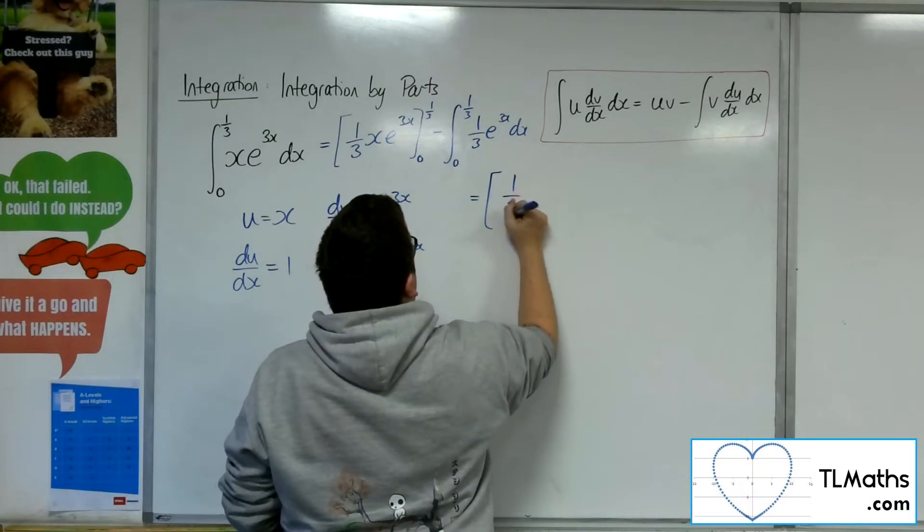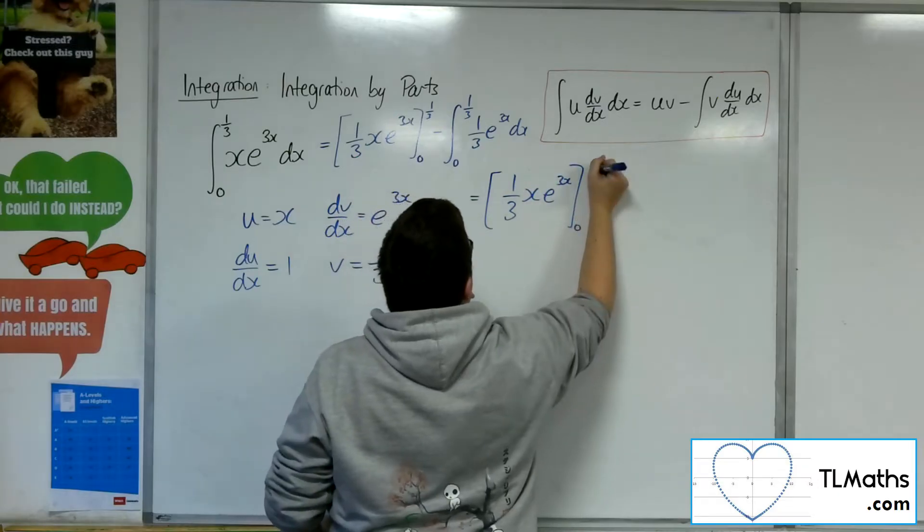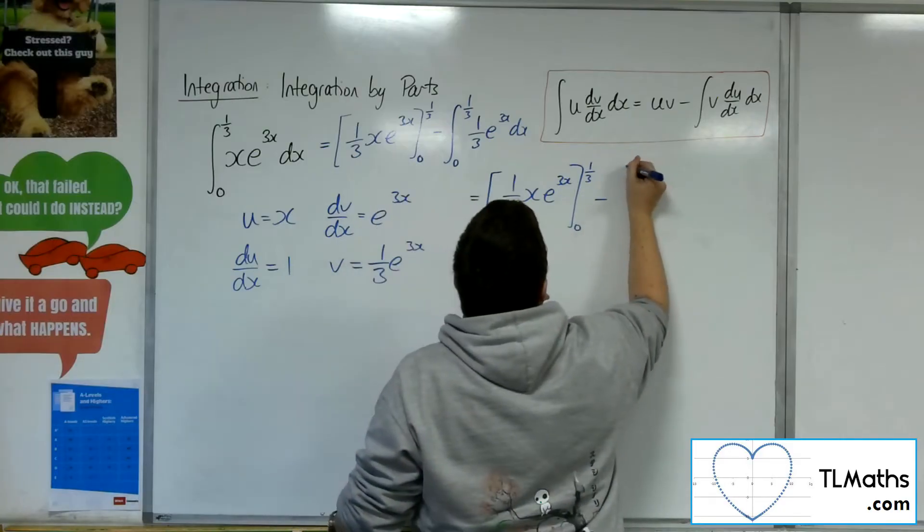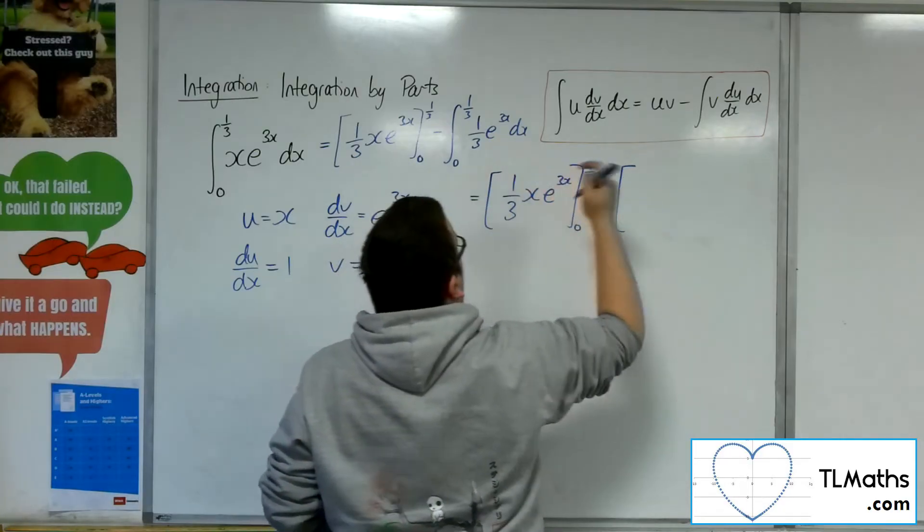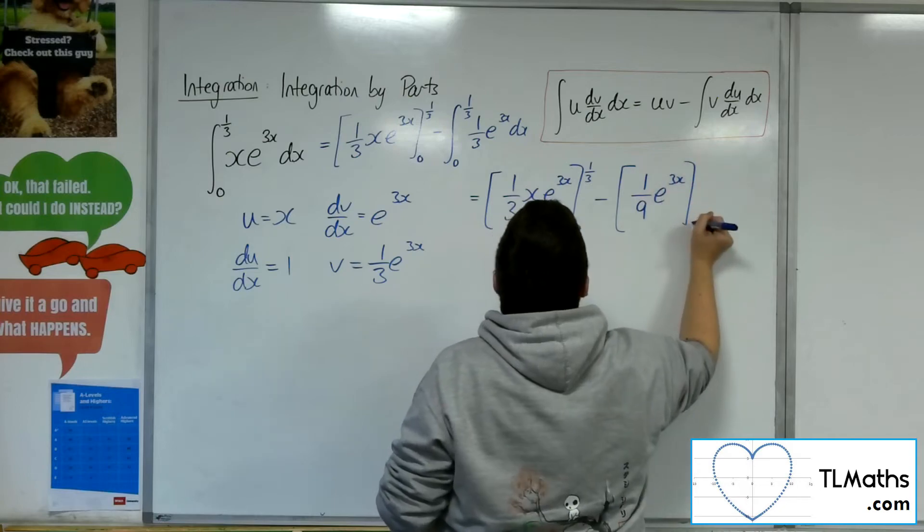So it's just going to stay there until I've dealt with the next integral. Now that is going to integrate to 1/9 e to the 3x, evaluated between 0 and 1/3.